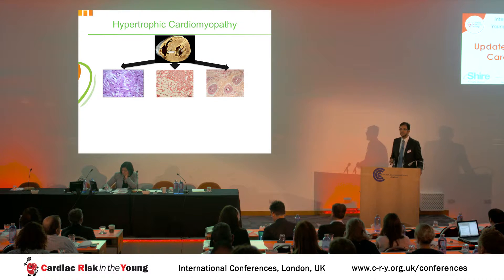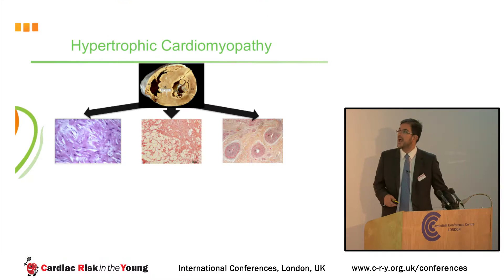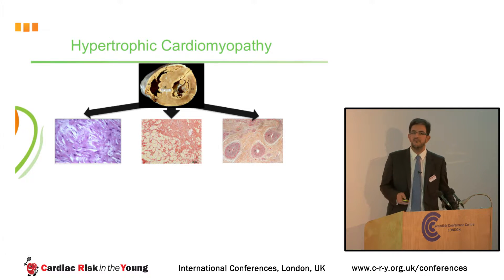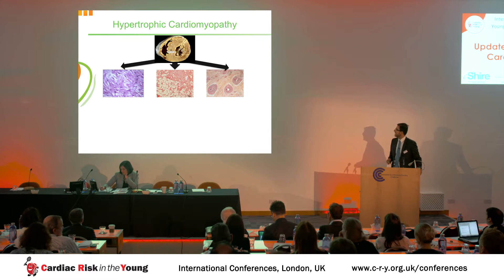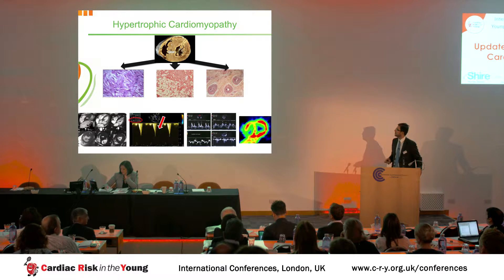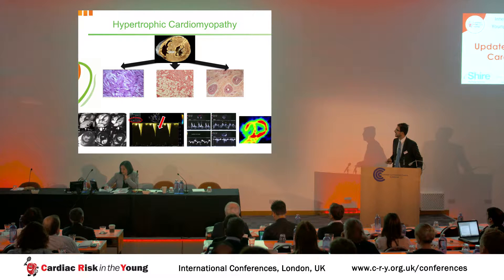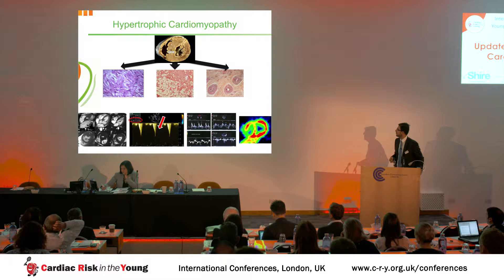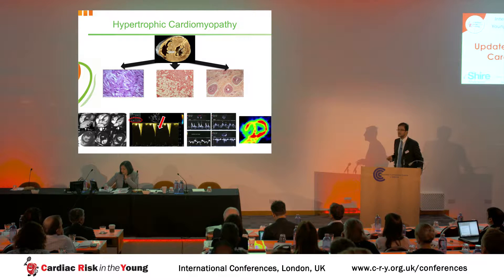Hypertrophic cardiomyopathy is a condition where the individual gets unexplained hypertrophy, and it can be associated with myocardial disarray, prominent fibrosis, as well as small vessel disease. In clinical practice, it can manifest with features such as very asymmetric hypertrophy — as you can see in those MRI images — left ventricular outflow tract obstruction due to thickening of the ventricle and systolic anterior motion of the mitral valve, diastolic dysfunction, and diffuse subendocardial ischemia.